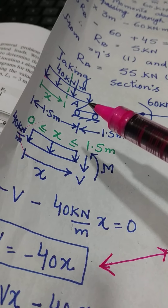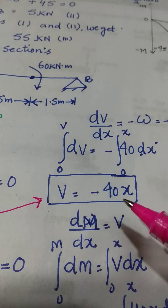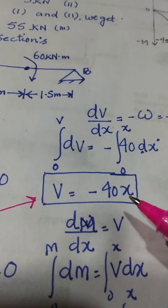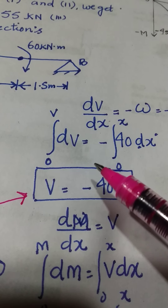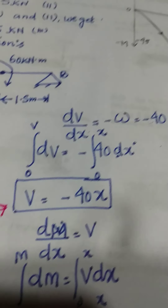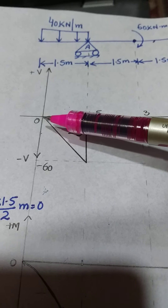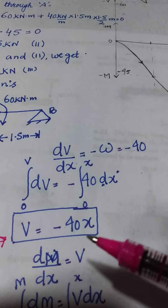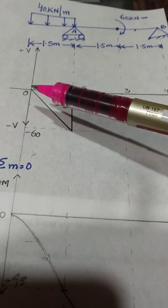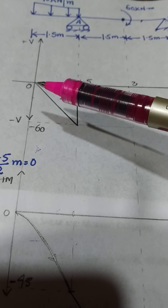Let's plot the shear force diagram for the span x equals 0 to x equals 1.5. At x equals 0, the shear force is 0. At x equals 1.5, the shear force is minus 40 times 1.5, which equals minus 60. Since this is a linear equation, the graph is a straight line varying from 0 to minus 60. So the shear force diagram from x equals 0 to x equals 1.5 is a straight line.